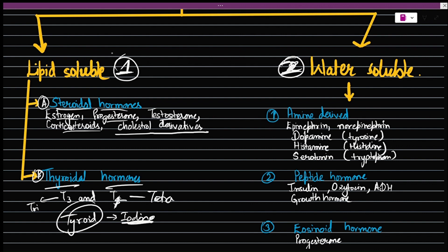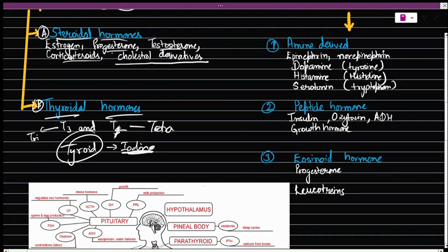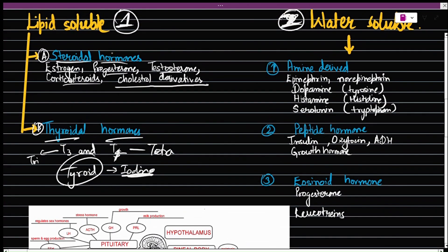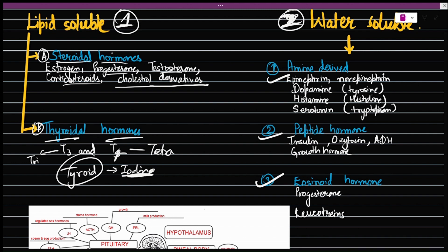And when it comes to water soluble hormones, they are of these three types. They can be amine-derived, peptide-derived, or eicosanoid hormones. Amine-derived contain epinephrine, norepinephrine, dopamine, histamine, and serotonin.